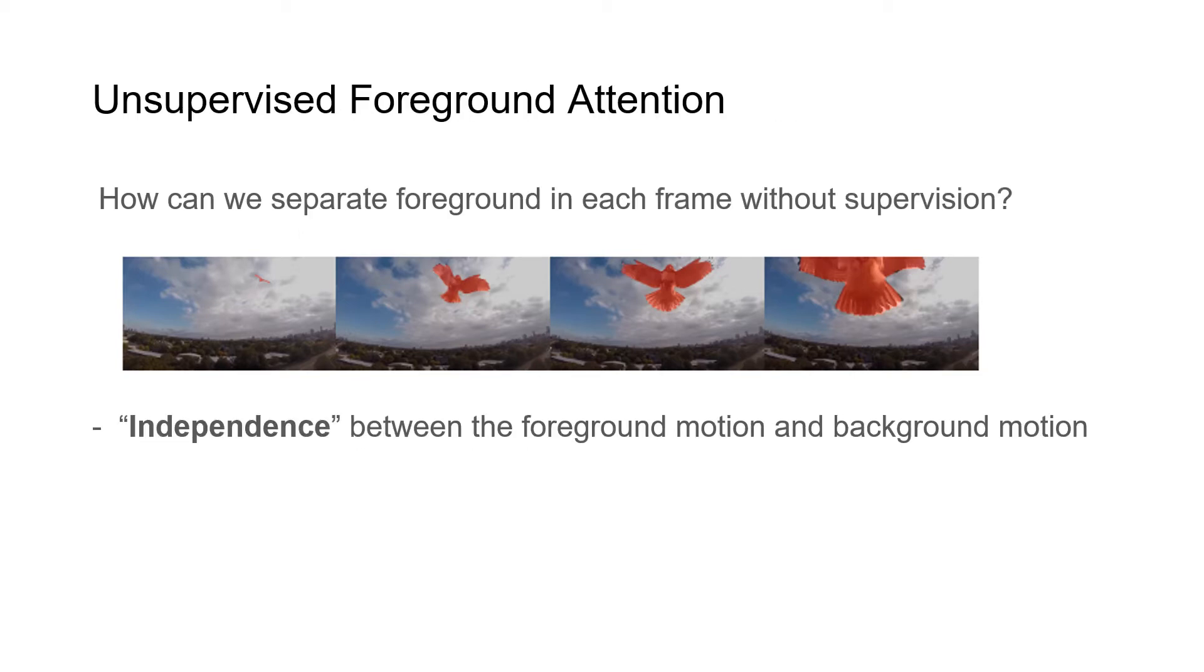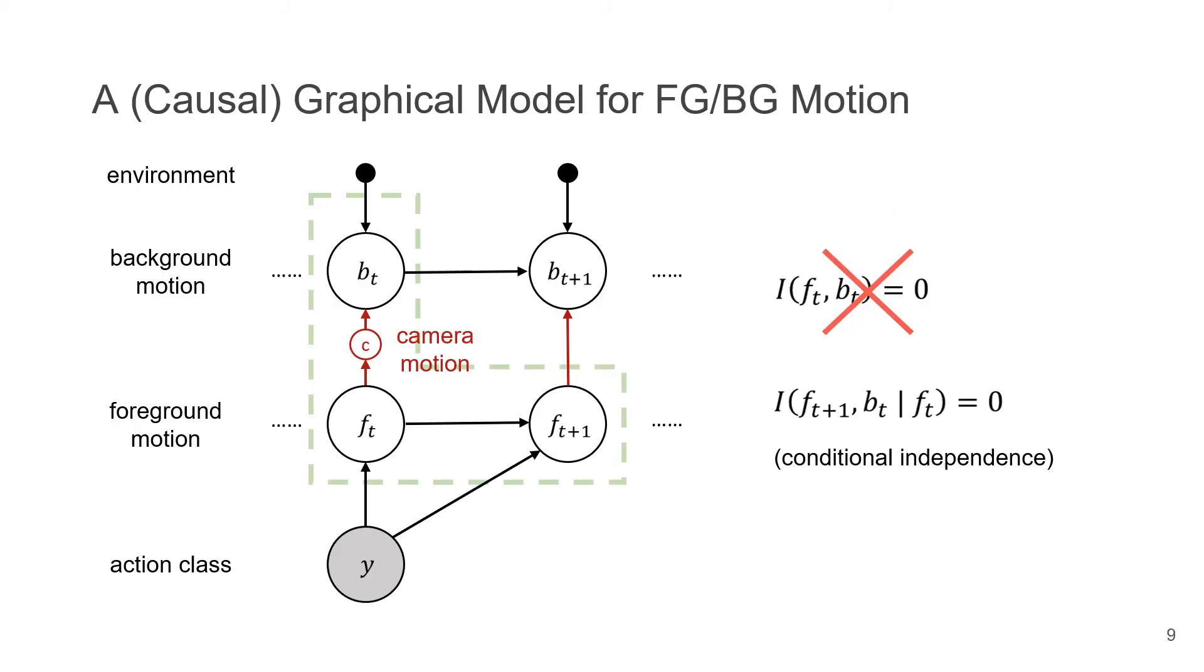Specifically, we use the independence between the foreground motion and background motion to segment the foreground object. We can build a graphical model of the foreground and background motion. So is foreground and background motion really independent? Actually no, because since we are dealing with video data, we should not only consider the motion in the physical world, we also need to consider the motion of the camera.